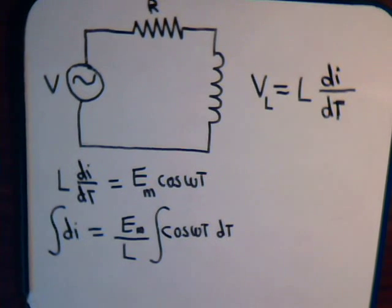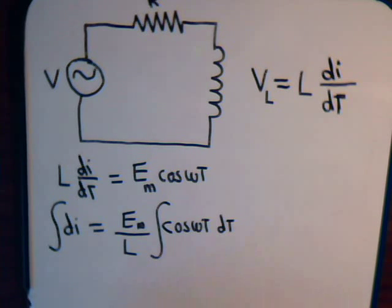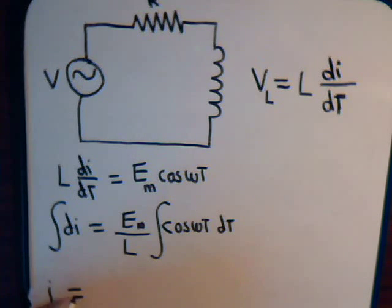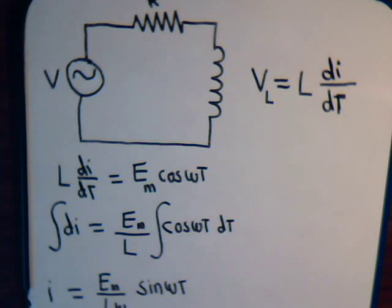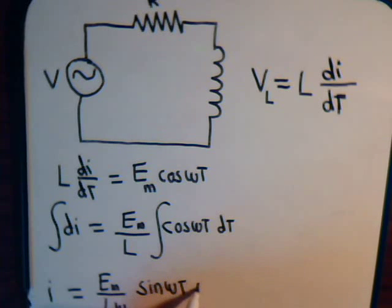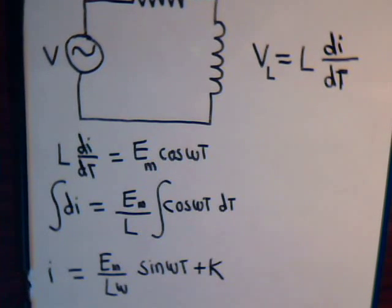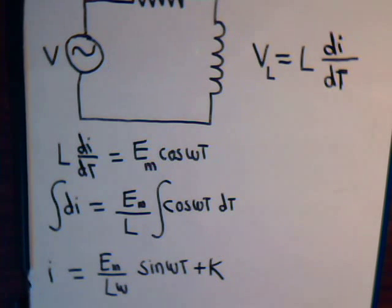We have a pretty simple setup here. We won't put limits on these integrals — we'll deal with that in a moment. We get I plus a constant of integration equal to Em divided by L, and then the integral of the cosine is the sine, so we get one over omega times the sine of omega T, plus an arbitrary constant of integration. This gives us an expression for the current associated with our inductor.